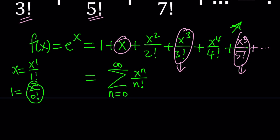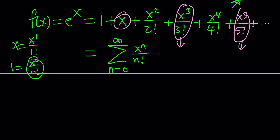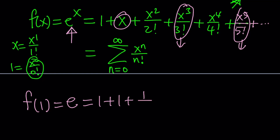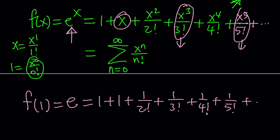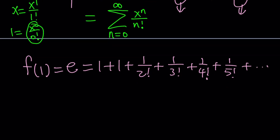Let's handle this with some quick manipulations. Since f(x) is defined as e^x, let's replace x with 1 and evaluate f(1). Obviously, f(1) is just e to the power 1, or just e. Replacing x with 1 everywhere, we get 1 plus 1 plus 1 over 2 factorial plus 1 over 3 factorial plus 1 over 4 factorial plus 1 over 5 factorial, and so on. This sum equals e, which means it converges.